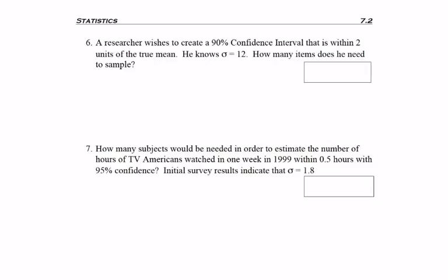So let's go ahead and look at these examples. Problem 6. A researcher wishes to create a 90% confidence interval that is within 2 units of the true mean. He knows that sigma equals 12. How many items does he need to sample?